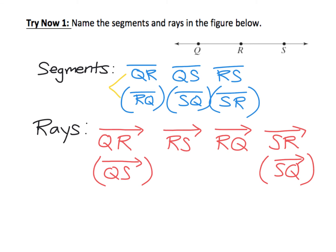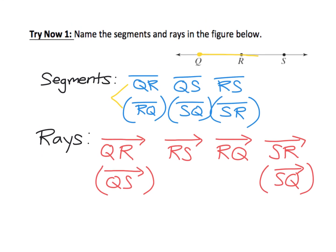For rays, the order of the letter does matter. I want to talk a little bit about ray QR. Remember that it has an endpoint Q and it extends toward R, but it goes past R in the direction of R. So ray QR is the exact same as ray QS because S is just further along that same ray. So those two are the same thing. You should have one or the other.